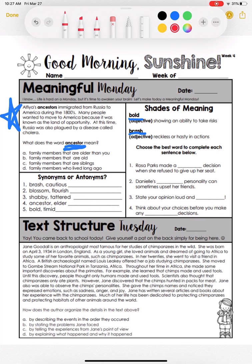Then we have Text Structure Tuesday. You're going to read this paragraph about Jane Goodall and answer the question at the bottom: how does the author organize the details in the text above?